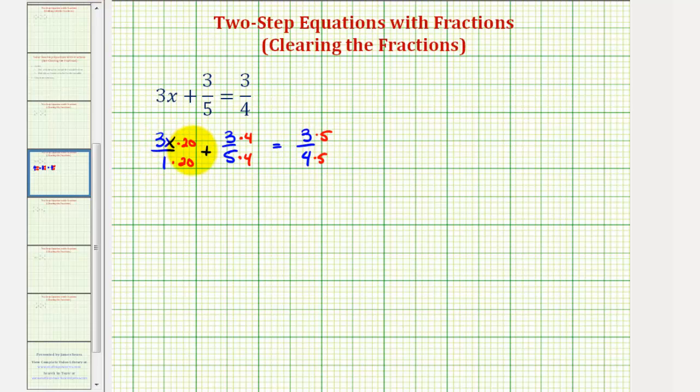So now we have 60x over 20 plus 12 over 20 equals 15 over 20.